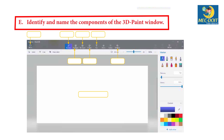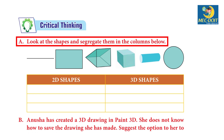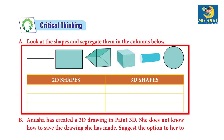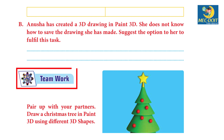E — Identify and name the components of the Paint 3D window — Answer: Do it yourself. Critical Thinking: A — Look at the shapes and segregate them in the columns below — Answer: Do it yourself. B — Anushka has created a 3D drawing in Paint 3D. She does not know how to save the drawing. Suggest the option to her. Answer: Steps to save a drawing in Paint 3D: Step 1 — Click Expand Menu button. Step 2 — Select Save As. Step 3 — Type a name for your project. Step 4 — Click the Save option.